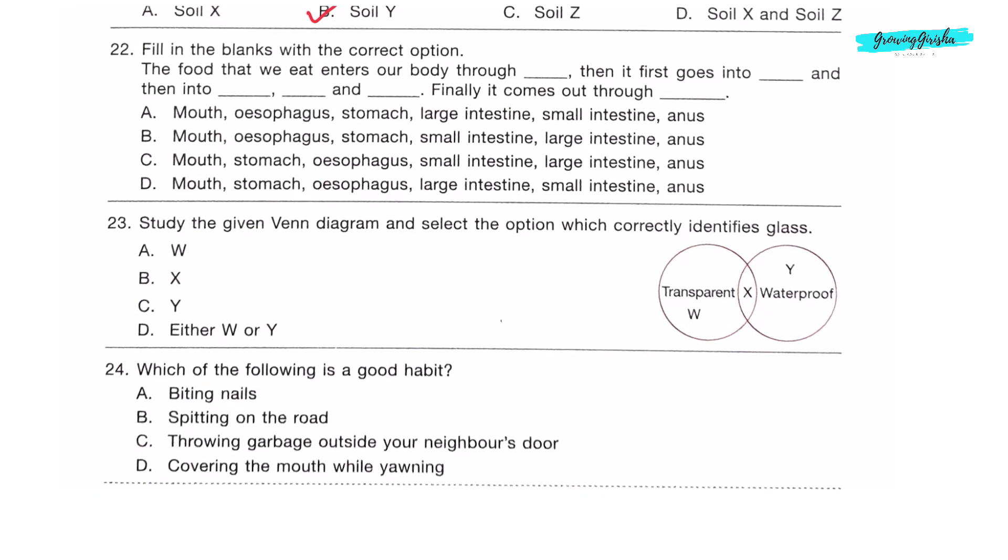Question 22: Fill in the blanks with the correct option. The food that we eat enters our body through mouth. Then it first goes into food pipe, known as esophagus, and then into stomach, large intestine and small intestine. Finally it comes out through anus. Option B is the correct answer.